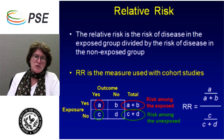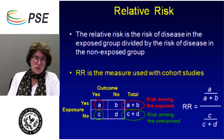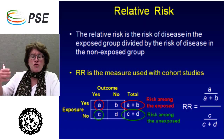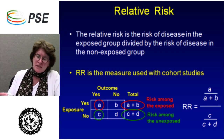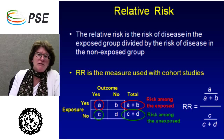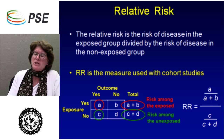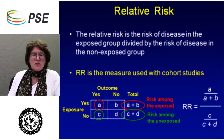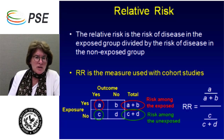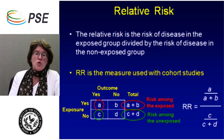If the relative risk is greater than one, it tells you there is some elevated risk of disease among those who were exposed compared to those who were not. If it's 1.1, it's pretty much a wash, but if it's 1.9 or greater than two, you're doubling the risk of disease because of exposure — that's telling you something. If it's less than one, there's some sort of protective effect. And if it's around one, maybe the study wasn't sufficiently powered, the population wasn't appropriate, or the study didn't go on long enough. All you can say is there's no association between risk factor and disease if the relative risk is about one.